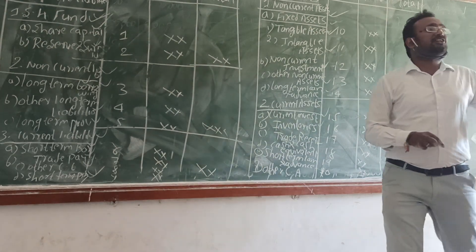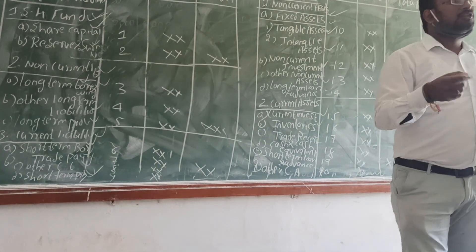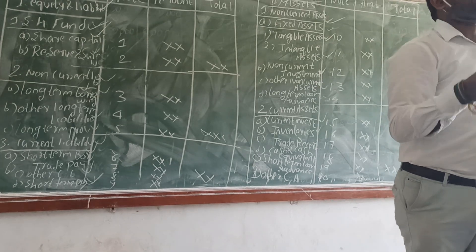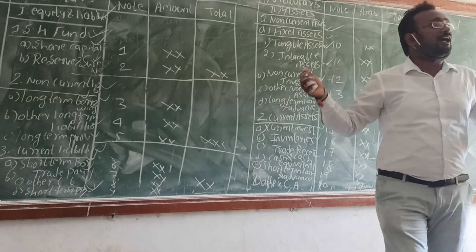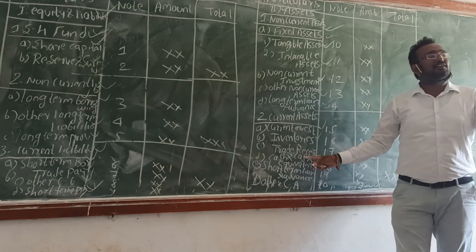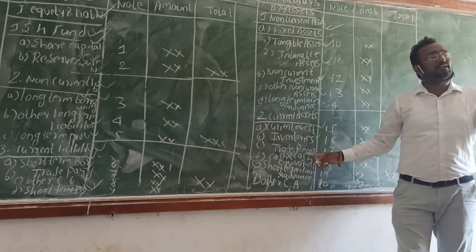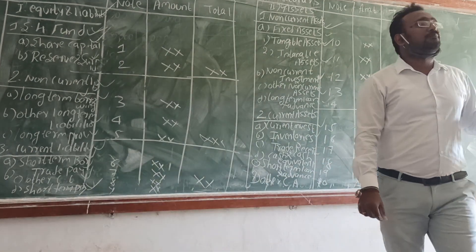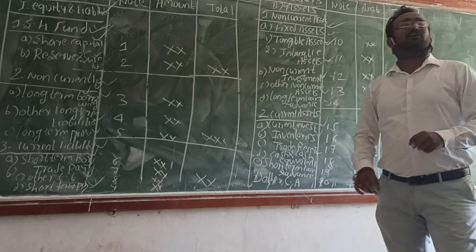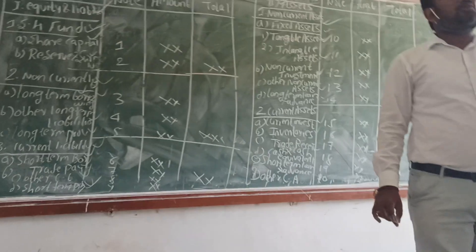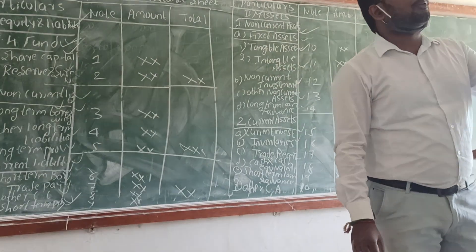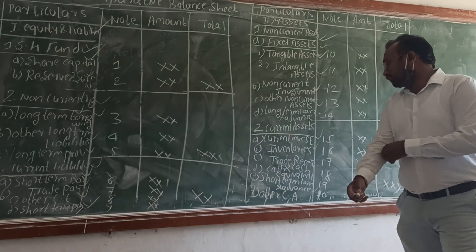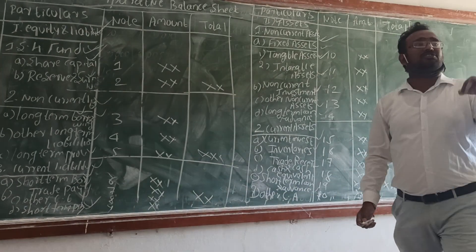Very important: cash and cash equivalent. Cash in hand and cash at bank are both put under cash and cash equivalent. Next, short-term loans and advances are also given in the problem. You have to include them under current assets.